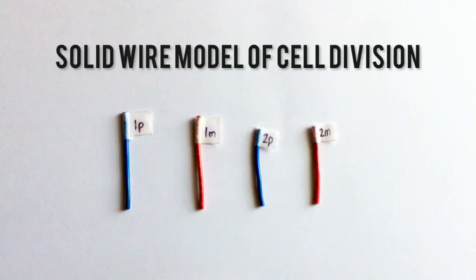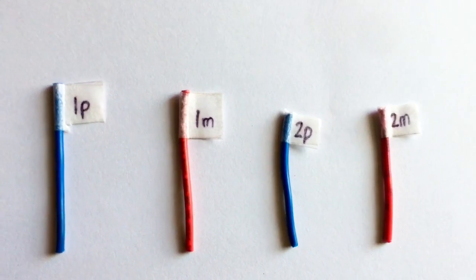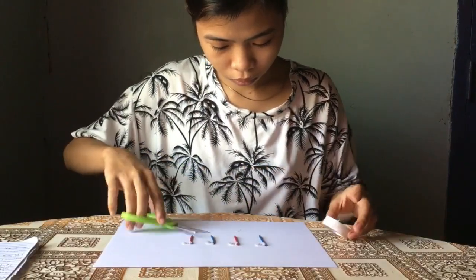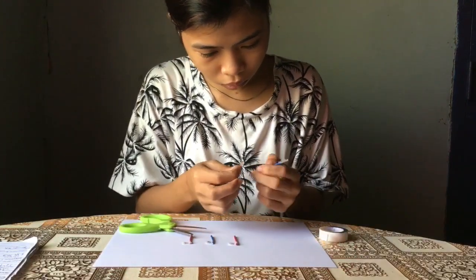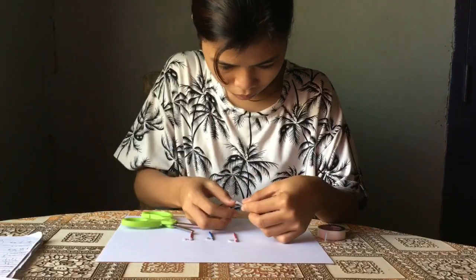Solid Wire Model of Cell Division. Get two long and short solid wires that will serve as the chromatin of the cell. Take a tape, then wrap it around the wire to indicate the position of the centromere. Place the tape in the middle of the longer wires and three-fourths of the shorter wires.